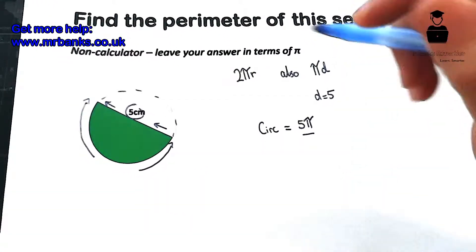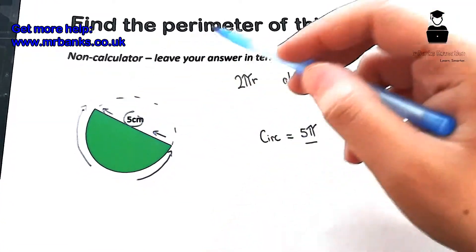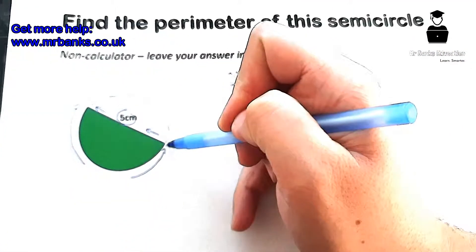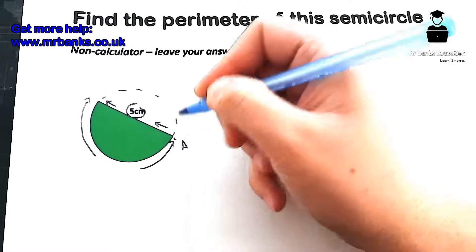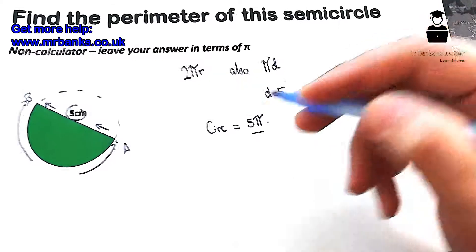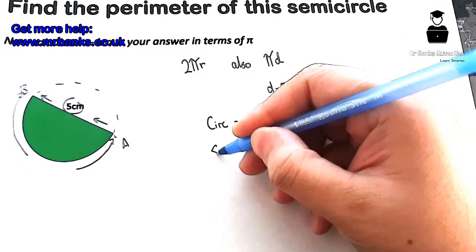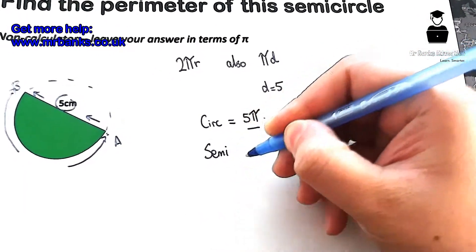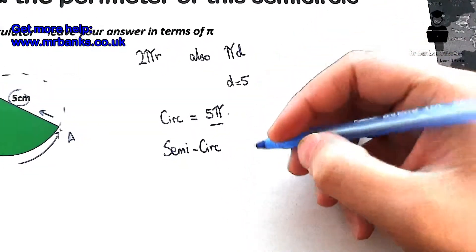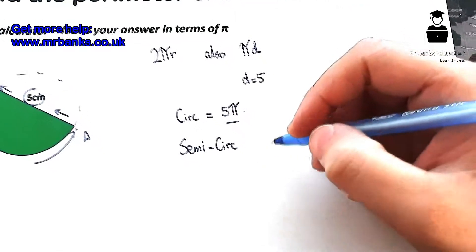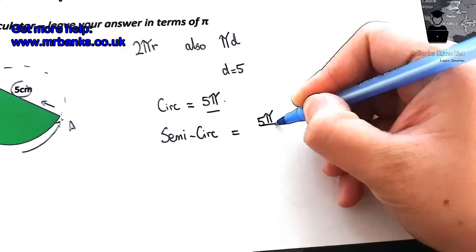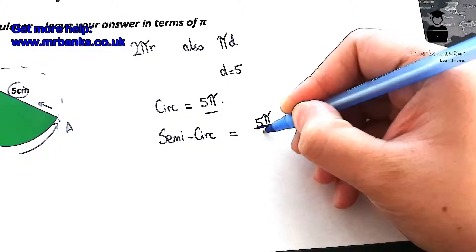Okay, so what you need to do is first of all, as you can see, the semicircle is going to be half of the full circle. So the circumference up until this point, let's say from A to B, is going to be half of that. So the semicircle circumference is going to be 5π/2.